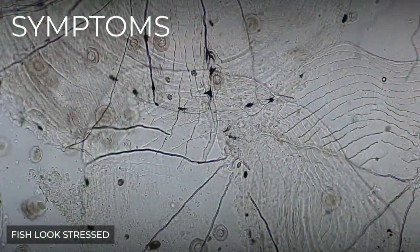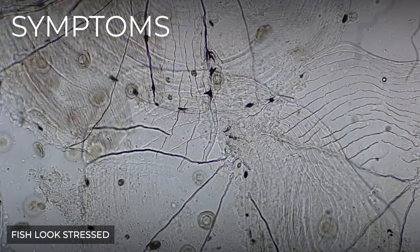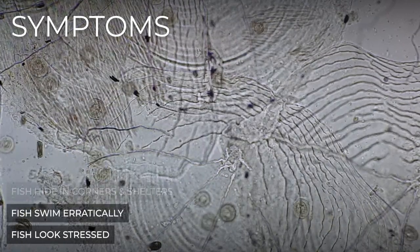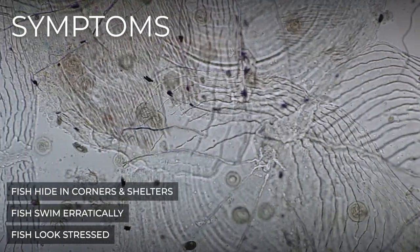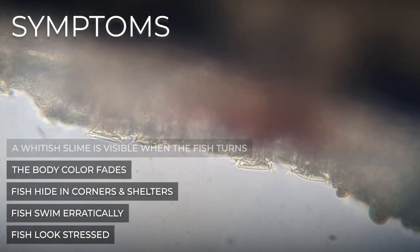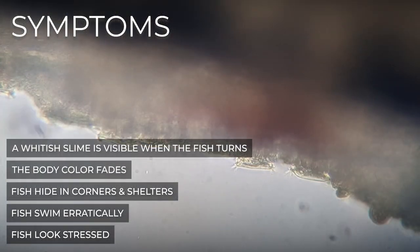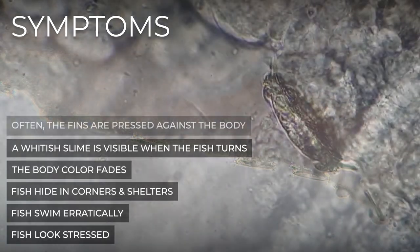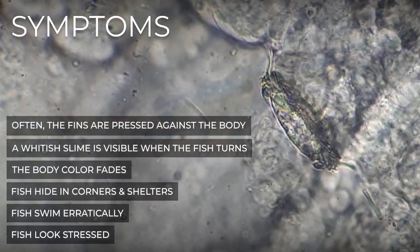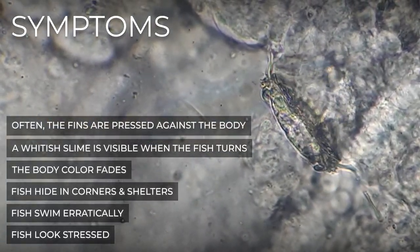Infected fish look stressed, swim erratically, or hide in corners and shelters. The body color fades, a whitish slime is visible when they turn, and often the fins are pressed against their body.